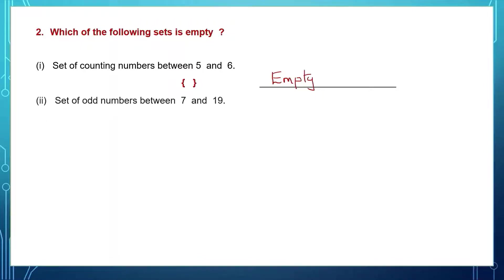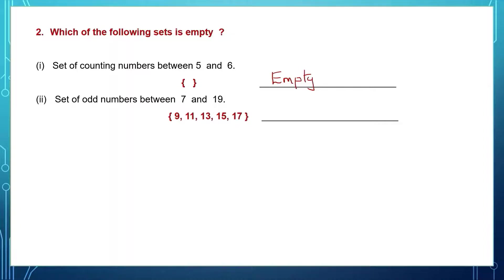Next one: set of odd numbers between 7 and 19. Let's write down all odd numbers between 7 and 19: 9, 11, 13, 15 and 17. So there are many elements — it's not an empty set. This set is not empty; it has elements in it.